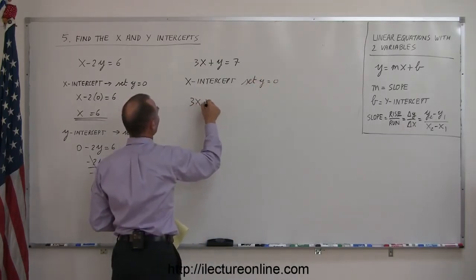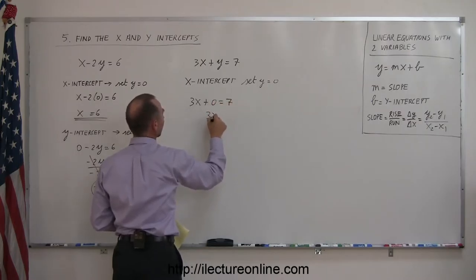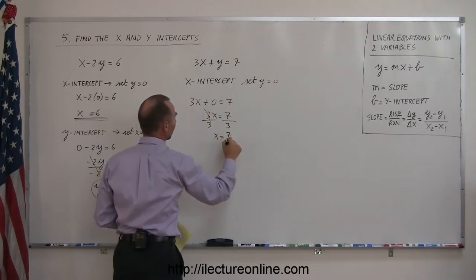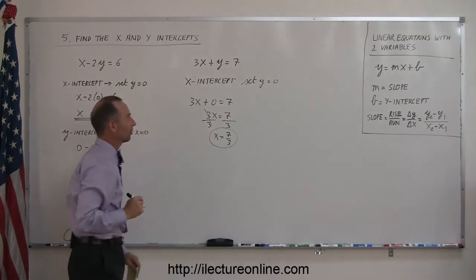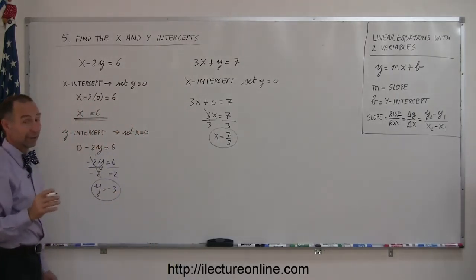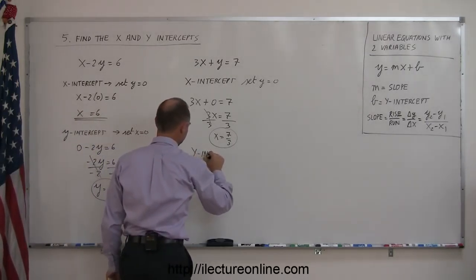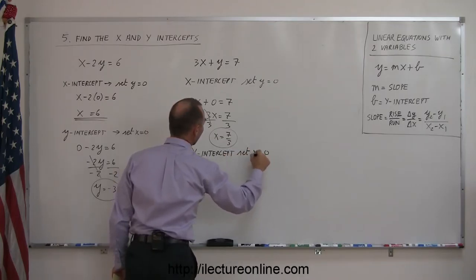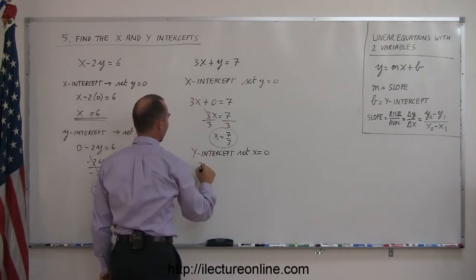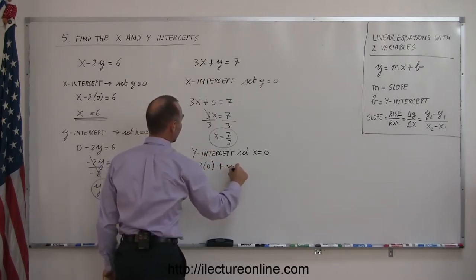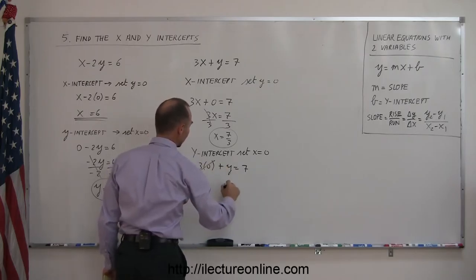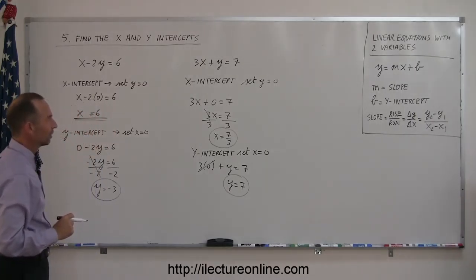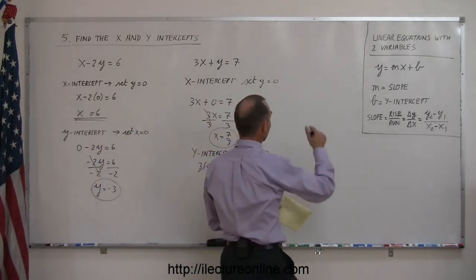Let's do a couple more of these to get the feel for it. Given the equation 3x plus y equals 7, let's find the x-intercept. Remember, to find the x-intercept, you set y equal to zero. So we have 3x plus zero equals 7, or 3x equals 7. Divide both sides by 3 and you get x equals 7-thirds. There's your x-intercept.